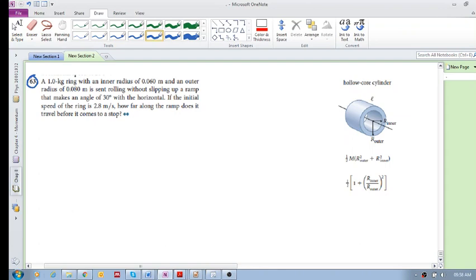Problem 63 in questions and problems in the practice textbook. A one kilogram ring with an inner radius of 0.06 meters and an outer radius of 0.08 is sent rolling without slipping up a ramp that makes an angle of 30 degrees with the horizontal. If the initial speed of the ring is 2.8 meters per second, how far along the ramp does it travel before it comes to a stop?